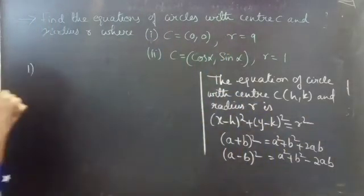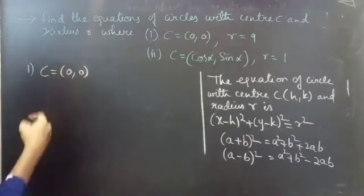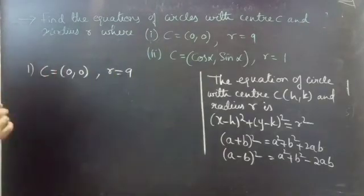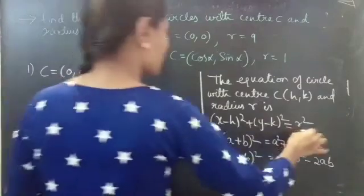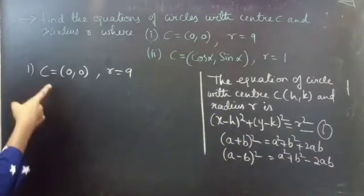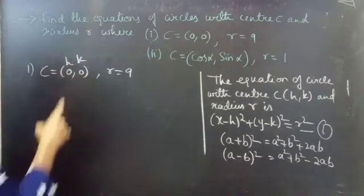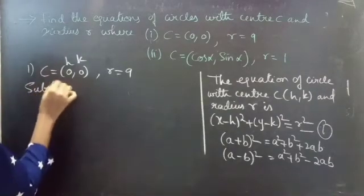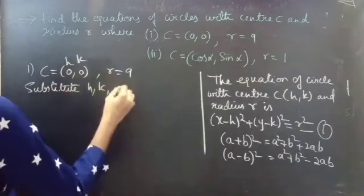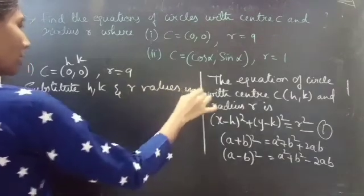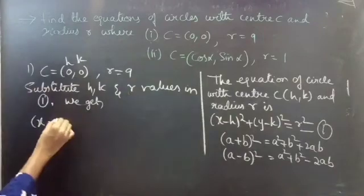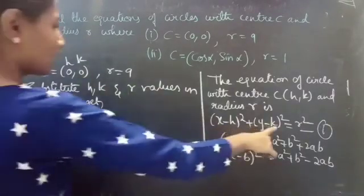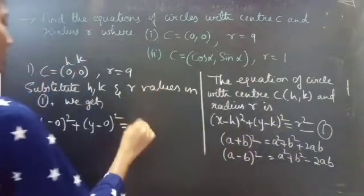Let's start with the first one. We are given C at the origin (0, 0), so the center is located at the origin, and we are given radius R equals 9. We are going to use the formula — let's label it as equation (1). We have H, K, and R values; now substitute H, K, and R values in (1).